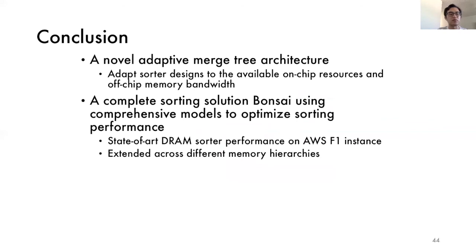So, in summary, in this work, we propose a novel adaptive merge tree architecture that adapts sorter designs to the available on-chip resources and off-chip memory bandwidth. Based on that, we build Bonsai, a complete sorting solution that uses comprehensive models to optimize sorting performance. With Bonsai, which achieves state-of-the-art DRAM sorter performance on AWS, we also extend our analysis across different memory hierarchies. That concludes our presentation. Thank you for listening.